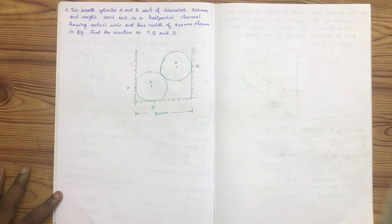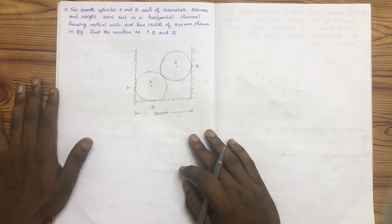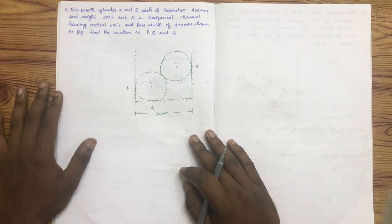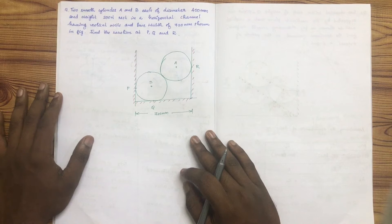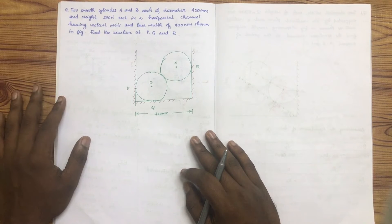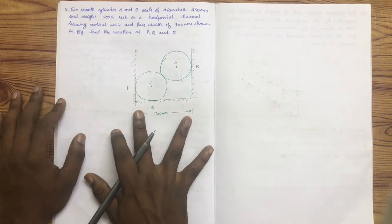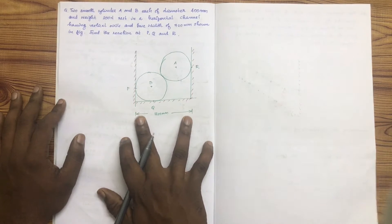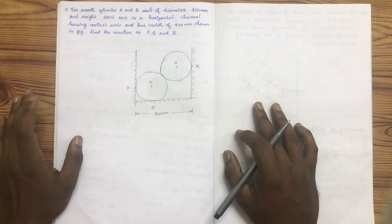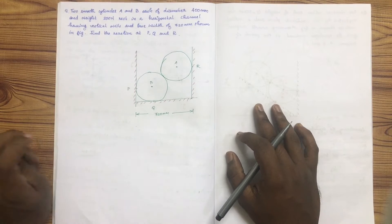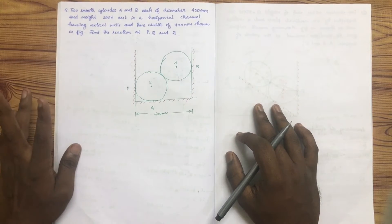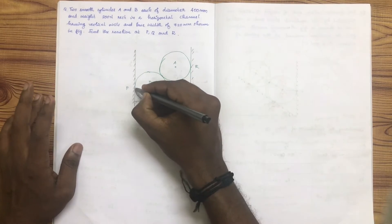Hi everyone. Two smooth cylinders A and B, each of diameter 400 mm and weight 200 N, rest in a horizontal channel having vertical walls and a base width of 720 mm. We need to find the reactions at B, Q, and R.